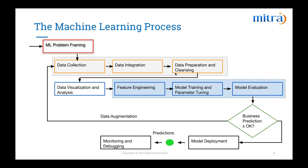After developing a model, we should think about how to productionize it. This is a different phase with its own challenges. For example, we might not need all the processing and computing power required in the training phase, but we should be able to scale to handle requests. We should also be able to manage machine learning model versions — if our data is updated each day, we should update our model each day, requiring a CI/CD pipeline. We should also be able to monitor and debug what's going on in the machine learning model.